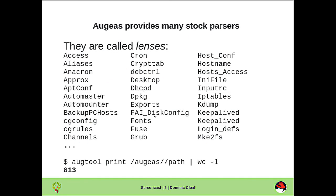Augeas has many different parsers. These transfer the file representation into a tree representation and back. Here are just a selection of them, and on my Fedora 18 system this parses 813 individual files by default.